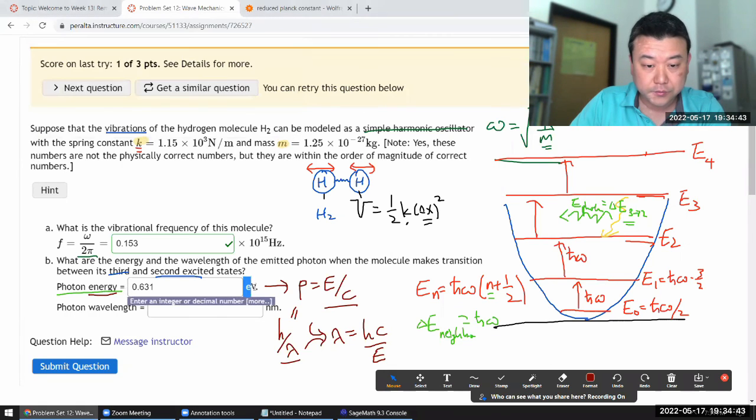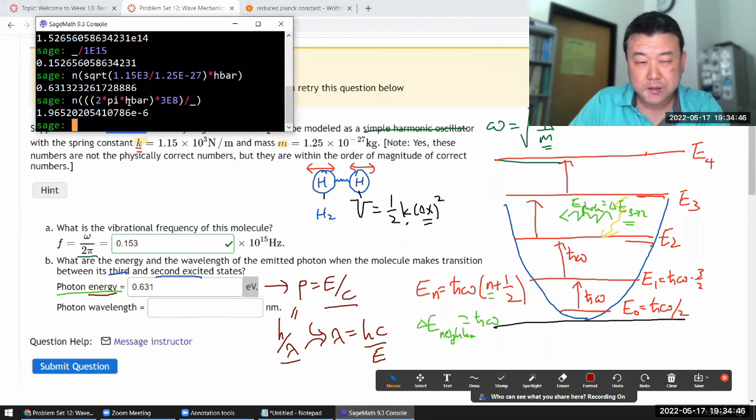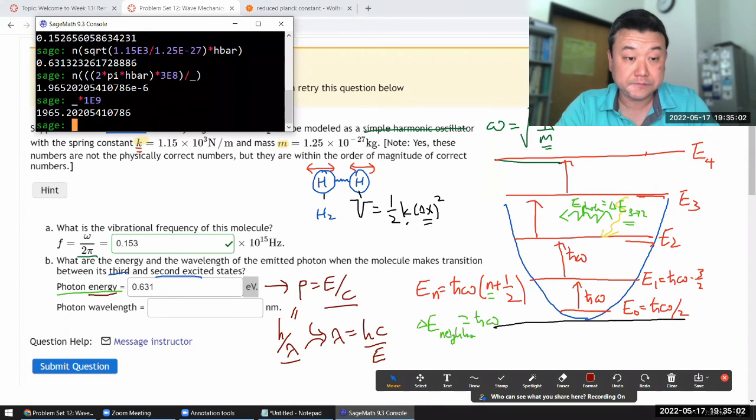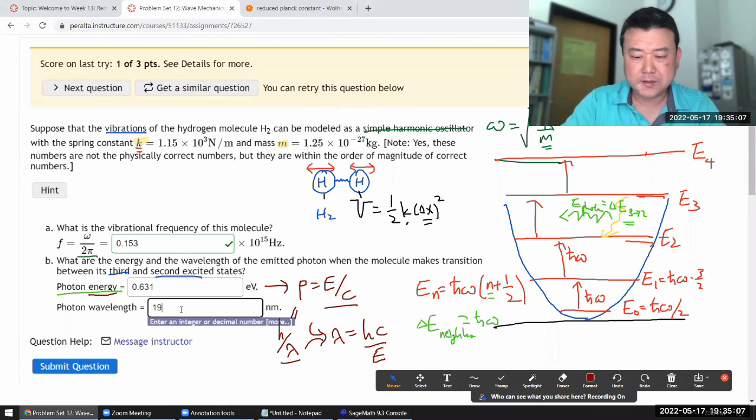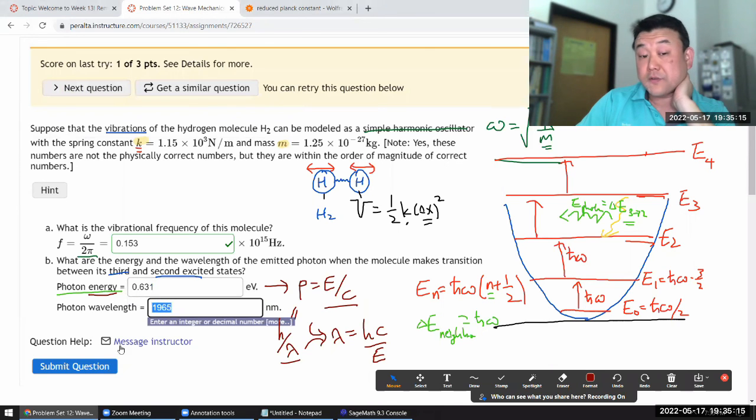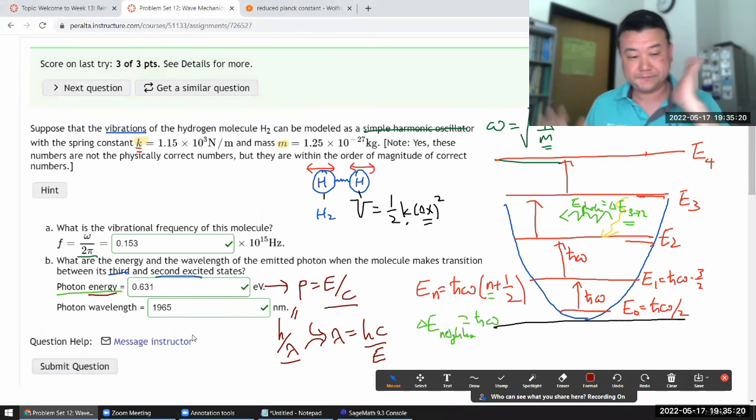Yeah so because all the numbers I plug in are in basic SI units except for the electron volt unit that I'm trying to make sure cancels out, the answer it gives me should be in the unit of meter. So to convert it to nanometer I multiply by 10 to the power of 9, 10 to the power of 9 nanometers. So 1965 nanometer, maybe that's right. 1965. Yeah this is on the low side of energies and this gives me something that's in the infrared. That feels right. Let's give it a try. Yeah that's it.